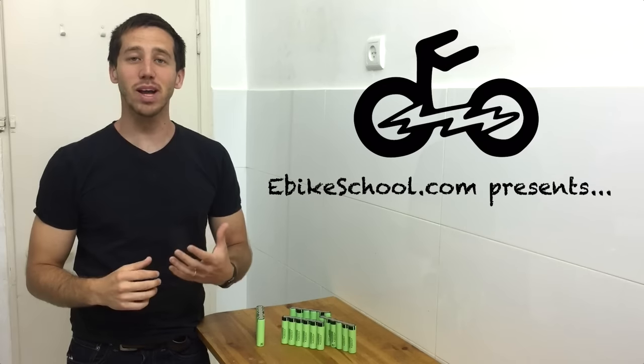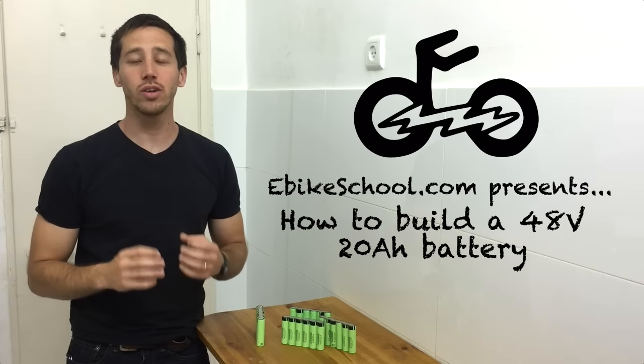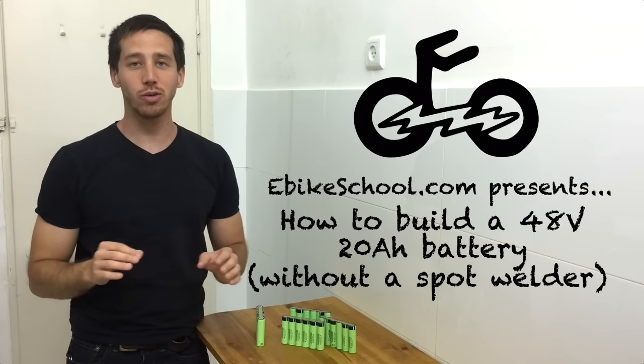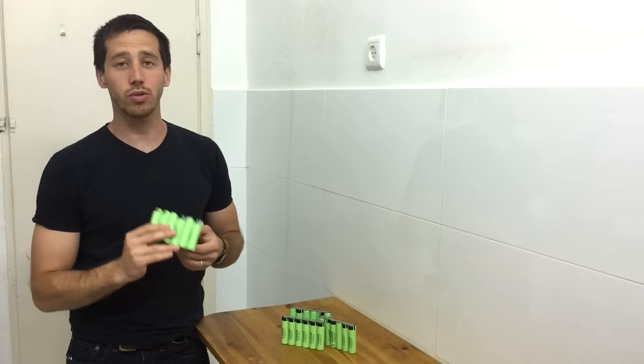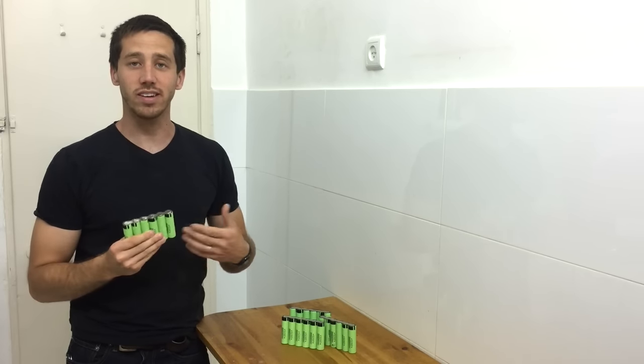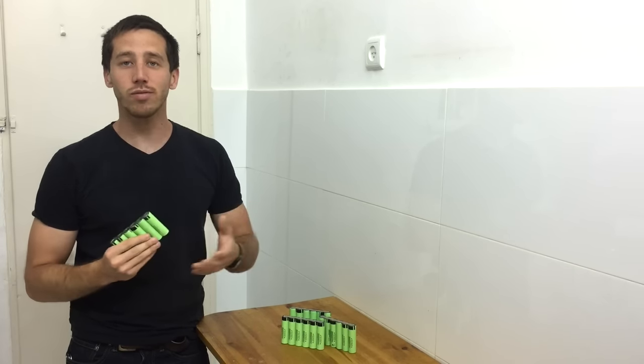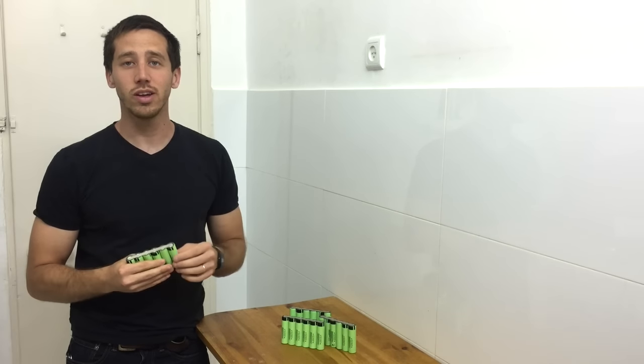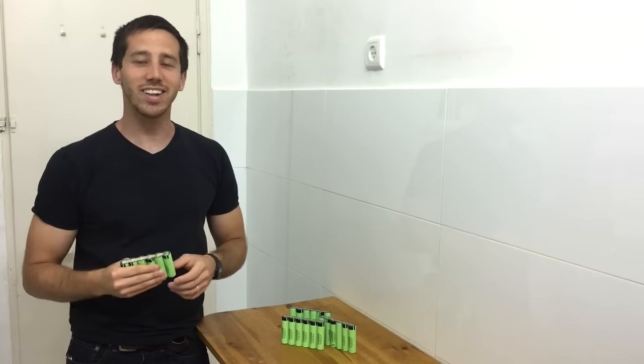Hi guys, Micah here from ebikeschool.com. Today I'm going to be showing you how to build a 48 volt, 20 amp hour battery without using a spot welder. To do that, I'm going to be using the battery modules from my battery building kits I designed that allow you to build a battery without a spot welder. These are called maker batteries and if you want to follow along with the steps that I'm doing, you can check out a kit at diybatteries.com. Alright, now let's go build a battery.